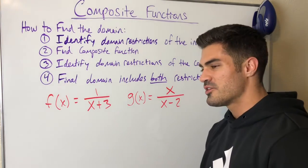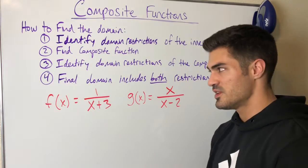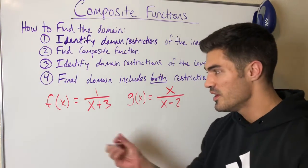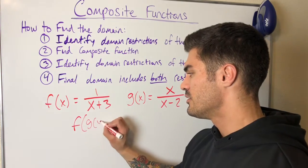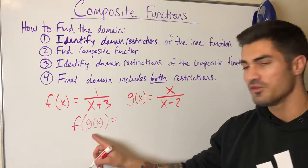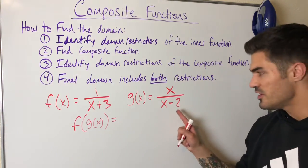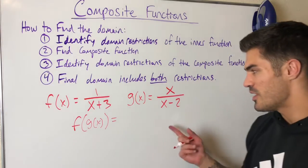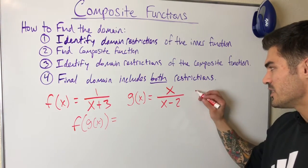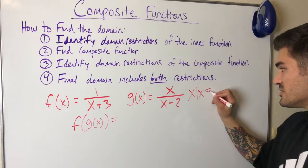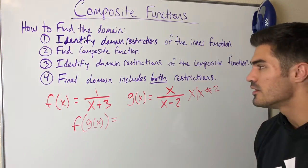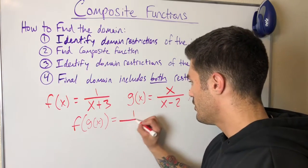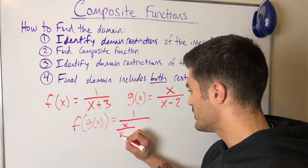Last example — very similar to the previous one. First, identify the domain restrictions of the inner function. We're finding f of g of x and its domain. Our inner function g(x) has x's in the denominator, so I set the denominator equal to zero. When x equals 2, I get zero in the denominator, so the domain of g(x) is x such that x does not equal 2.